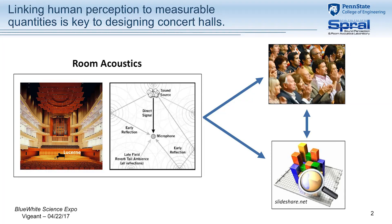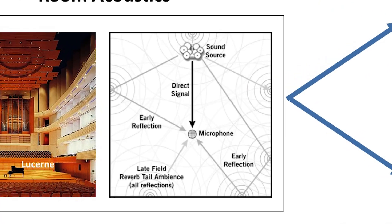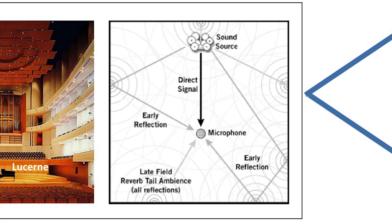If we looked at a top view, this would be our sound source — for example, a piano — and then a microphone, or you the listener. You can see how the sound is reflecting off the different surfaces, creating what we would call a sound field. In order to have good acoustics, we want to ideally shape and design our space so that it's perceived as sounding good.